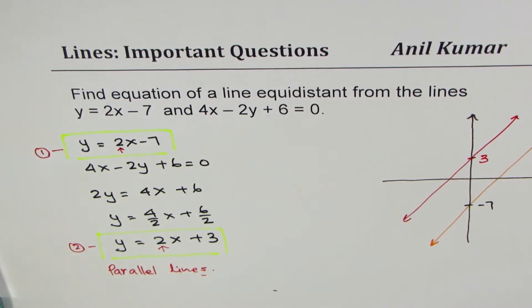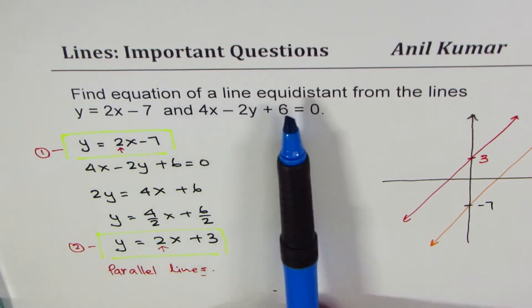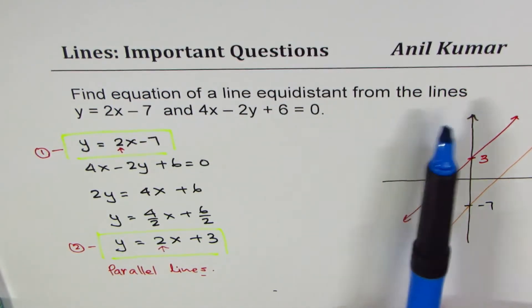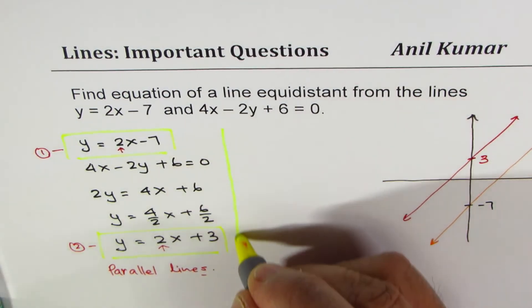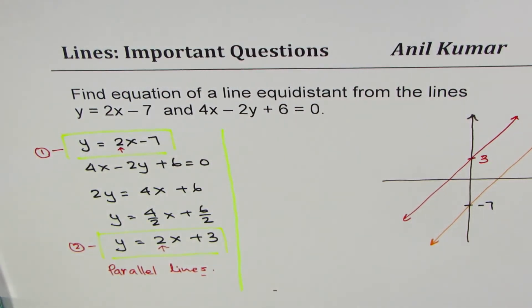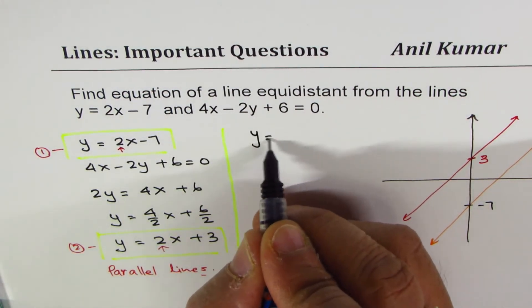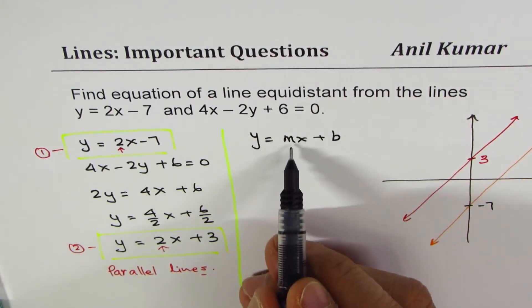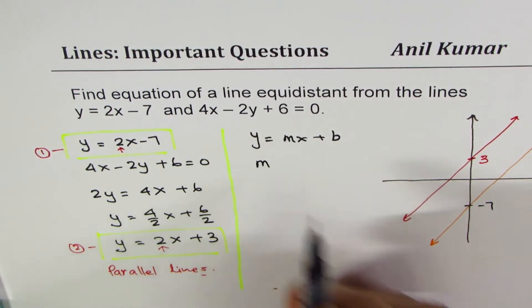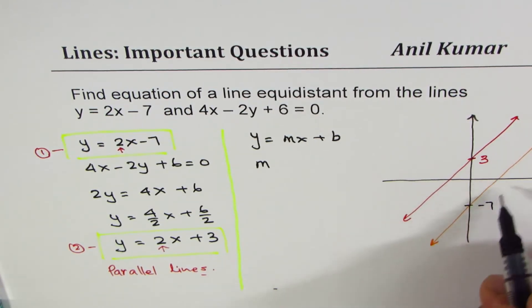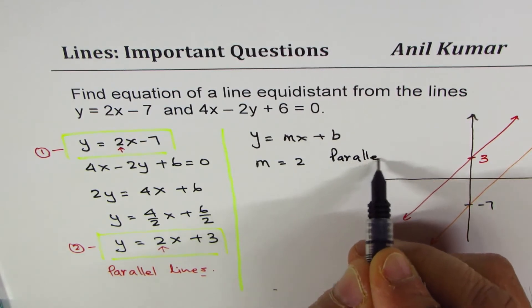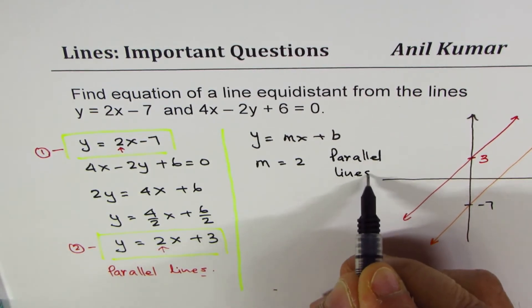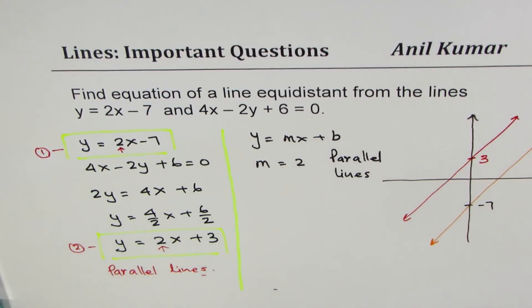Now, I think you can get the answer. Find equation of a line equidistant from these lines. So the best way is we need equation of a line. So we could write equation of a line in the form of y = mx + b. You know m. If it is parallel to them, then slope is same. So m = 2 since we are talking about parallel lines.